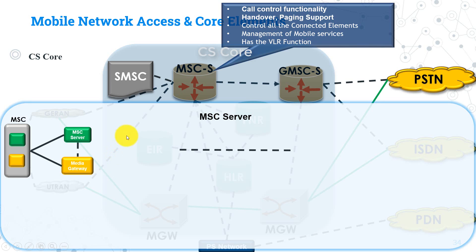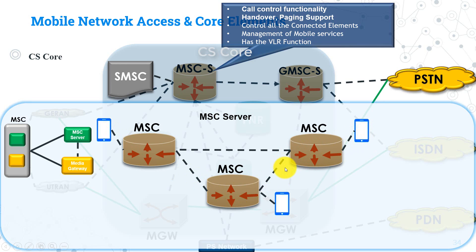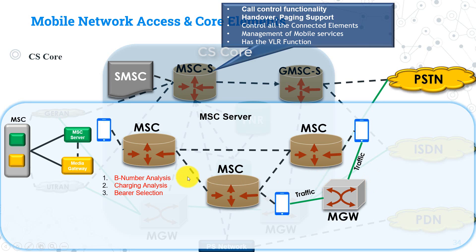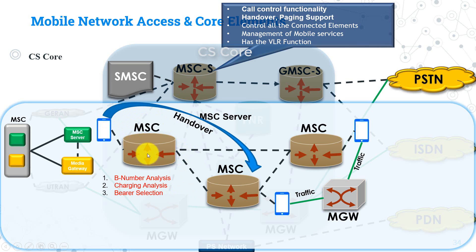The MSC Server is the most important node in any circuit switching network. It exists in the control layer and is responsible for all signaling messages passing through the core and access network. MSC Server has all call control functionality, switching mobile phone calls between subscribers, but it does not process the payload — that is the media gateway's function. It contains all call and service control logic such as B-number analysis, charging analysis, and bearer selection. It also handles the handover process when a mobile subscriber moves from one MSC coverage area to another, and assists in the paging process.